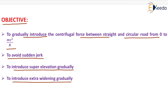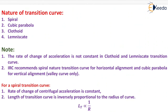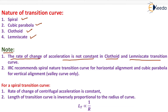If we provide a transition curve at the junction of straight alignment and circular curve, we will avoid the sudden jerk condition. The nature of transition curves is generally spiral, cubic parabola, clothoid, and lemniscate. Note that the rate of change of acceleration is not constant in clothoid and lemniscate transition curves, which is why they are not used. IRC recommends a spiral nature transition curve for horizontal alignment and cubic parabola for vertical alignment.